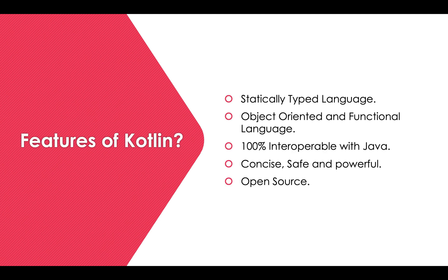Now, the features of Kotlin. First, Kotlin is a statically typed language, meaning it checks types at compile time. For example, if you declare a variable as an integer, you cannot assign a string value to it — that is checked at compile time.